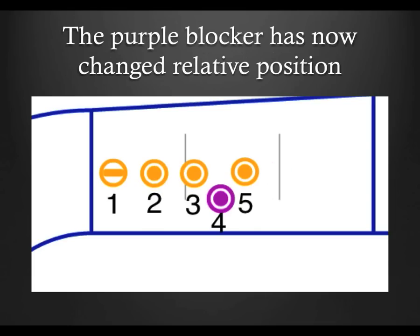If she passes the blocker's hips, then she would suddenly be number 4, and the blocker she passed would be number 5. We've now effected a change in relative position.